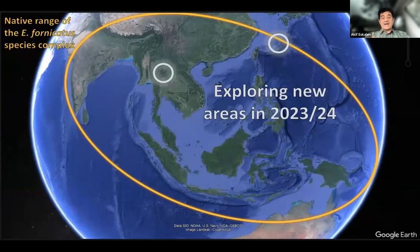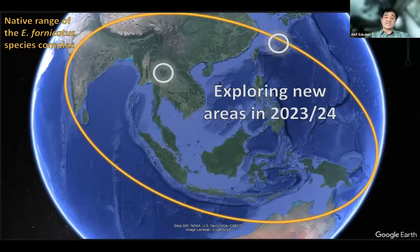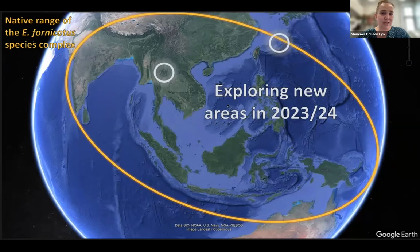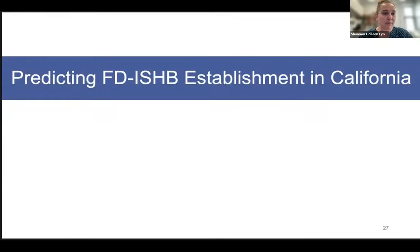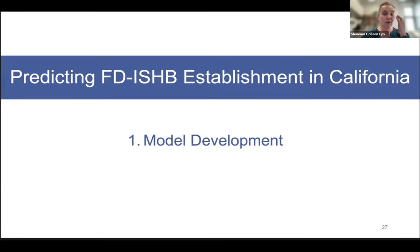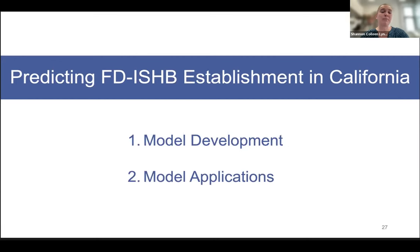There are other Southeast Asian countries that have not yet been explored. With the new funding extension Shannon mentioned, there will be opportunity to go to those countries and look for additional natural enemies of these beetles. Those new explorations will be led by Dr. Paul Rubman Jones from UC Riverside. Now moving on to talk about the risk map that was developed — I'll give a background on how the model was developed, where it comes from, how we are applying it, and where it is going.